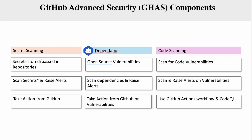Dependabot is an open source vulnerability scanner. It looks for vulnerabilities in open source libraries used in your container — dependencies or libraries used by packages which could be vulnerable. It can help raise an alert, and it can also take an action from GitHub on vulnerabilities that it identifies.